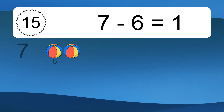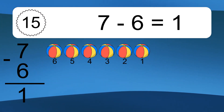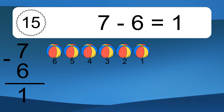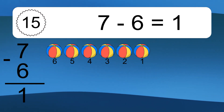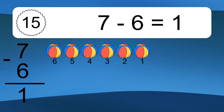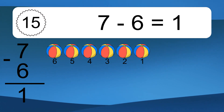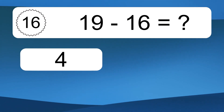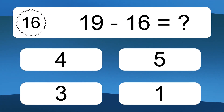7 minus 6 equals 1. Let's count it. 6, 5, 4, 3, 2, 1. 19 minus 16 equals what?